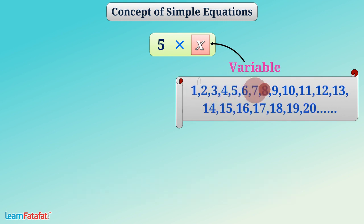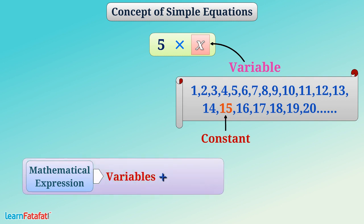Variable means a number that can vary. That is, a number which can take different values. If we think about number 15, it has a fixed value. We can say that it is a constant. The mathematical expression formed using the variables and the constants is called an algebraic expression.